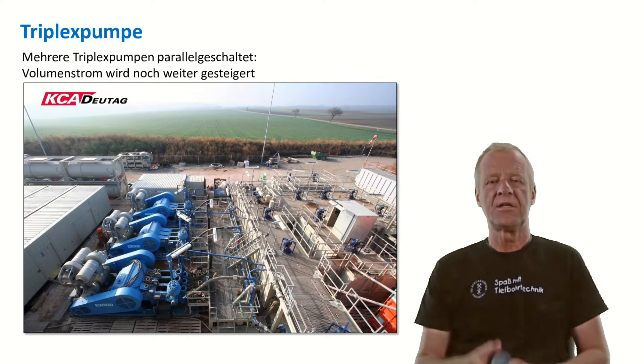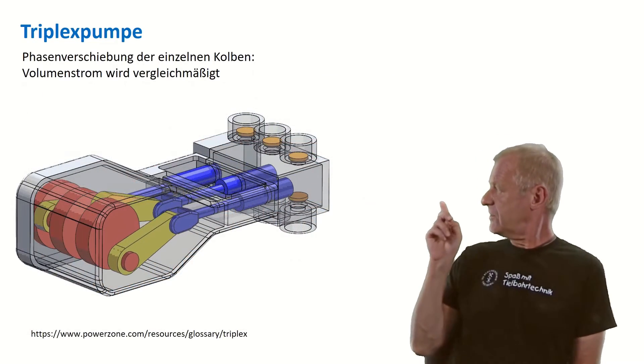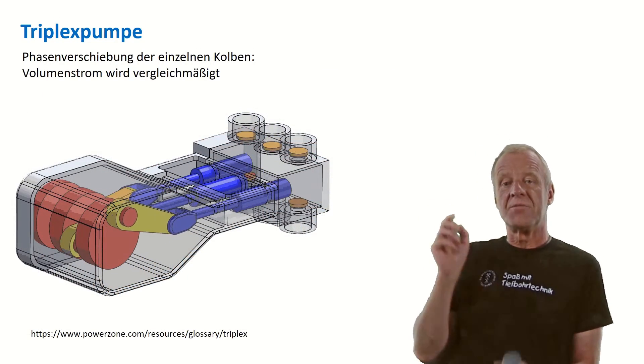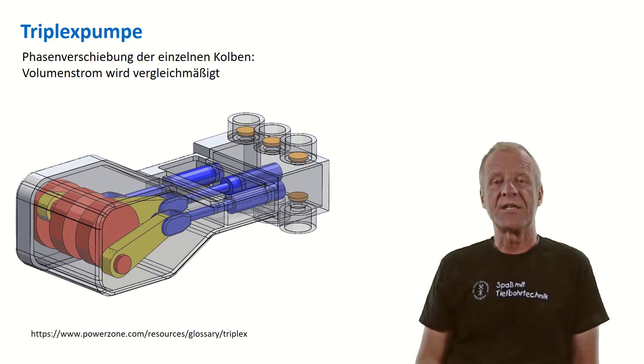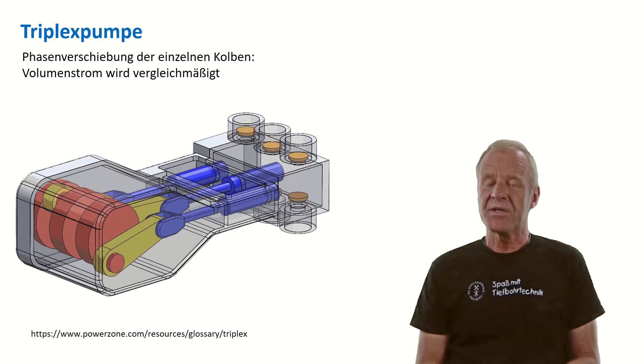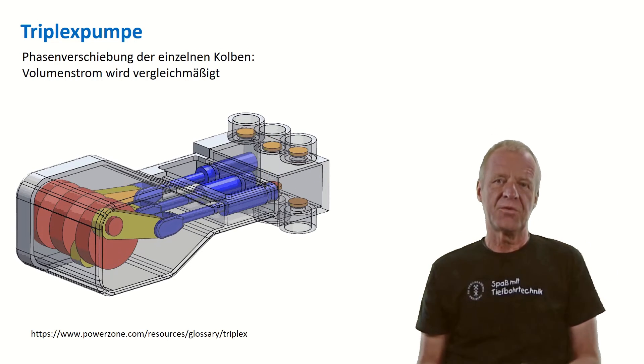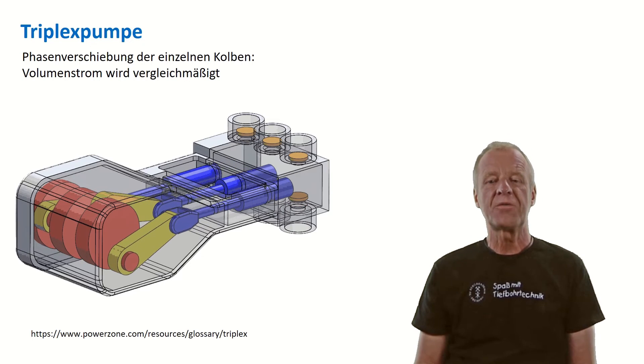But what can we do to smoothen the pulsating flow? Again, there is a simple solution to this problem. We arrange the pistons so that the work phases are shifted against each other as you can see here. In this arrangement, there is always at least one piston moving forward, resulting in a much smoother overall flow rate of a triplex pump compared to just a single pump.